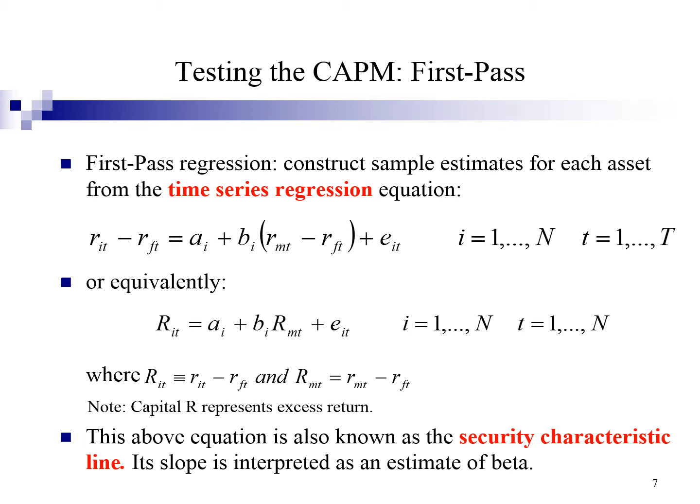The first step in testing CAPM is to estimate the beta values of all stocks during the sample period. i refers to stocks and t refers to time. The first-pass regression is a time series test using the equation: return of stock minus risk-free rate equals a plus b times market return minus risk-free rate plus error term. Equivalently, excess return equals a plus b times market excess return plus error term, where capital R represents excess return. This equation is also known as the security characteristic line, and its slope is interpreted as an estimate of beta.